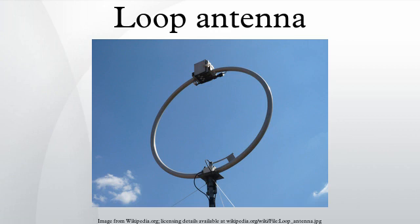Although a resonant loop may be in the shape of a circle, distorting it into a somewhat different closed shape does not greatly alter its characteristics. For instance, the quad antenna popular in amateur radio consists of a resonant loop in a square shape so that it can be constructed of wire strung between insulators. Or the loop can be completely collapsed into a line, in which case it becomes a folded dipole. In either case, the antenna's resonant frequency is determined by the circumference of the loop.